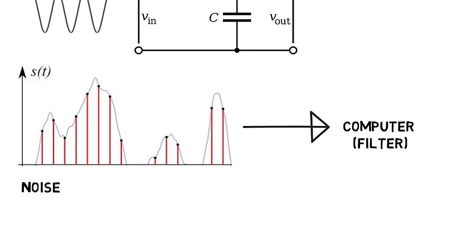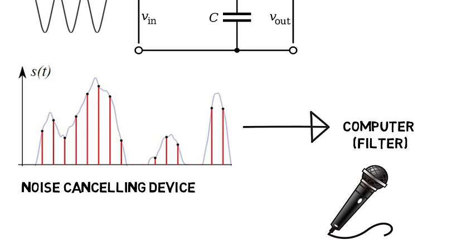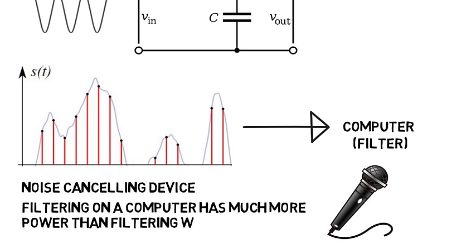One project was to create a noise cancelling device so if someone is speaking into a microphone and there's unwanted noise in the background or whatever, the device could remove that noise. Filtering on a computer is much more power than filtering with just one circuit. And by the way this is a math intensive subfield too because those filtering techniques are all math manipulation.